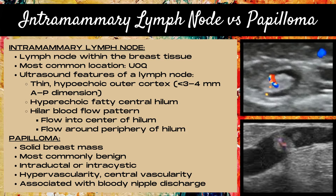A thin hypoechoic outer cortex measuring less than 3 to 4 millimeters in the AP dimension, a hyperechoic fatty central hilum, and a hilar blood flow pattern — which is flow into the center of the hilum, flow around the periphery of the hilum, or sometimes both.